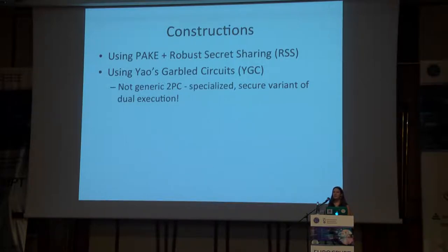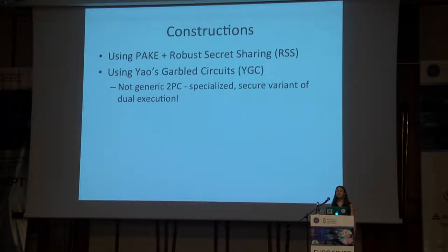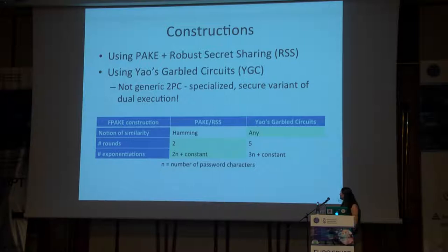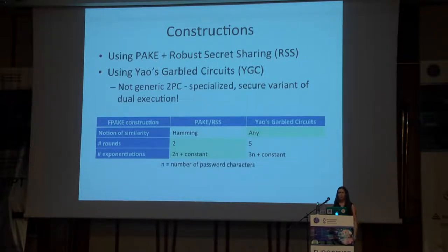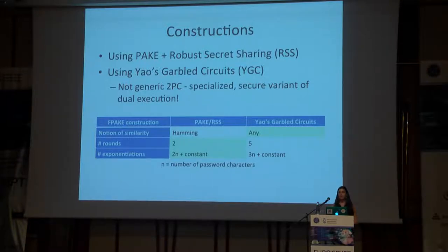Some of you might find this alarming because I said earlier that I wanted to avoid using generic two-party computation because it's inefficient — and here I'm saying I'm going to use one of the most famous generic two-party computation schemes. But we actually don't use it in the straightforward way; we do something special specifically for Fuzzy PAKE that is actually pretty fast. These two constructions differ in what notions of similarity between passwords they support. The Yao's garbled circuit construction supports any efficiently computable notion of similarity, while the PAKE and robust secret sharing construction is limited to Hamming distance. The Yao's garbled circuit construction pays for its generality with lower efficiency, both in terms of rounds and computation.